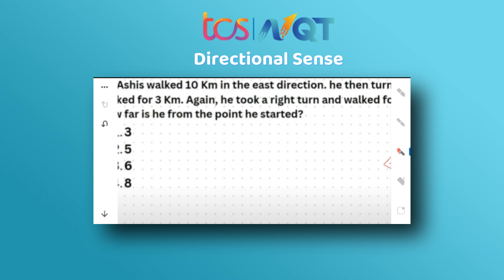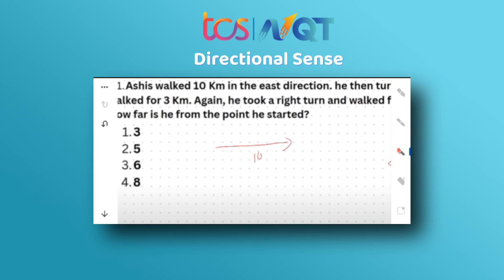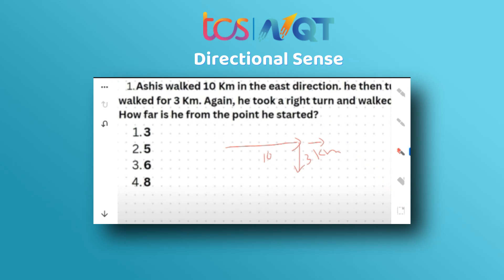If you have good imagination power, this type of problem will be very much easier. Let's start assuming that you are Asis and you are walking in the east direction for 10 kilometers. He then turned right and walked for 3 kilometers. Turning right means going towards the south direction. Now he took another right turn and walked for 14 kilometers — turning right while facing south means going west.